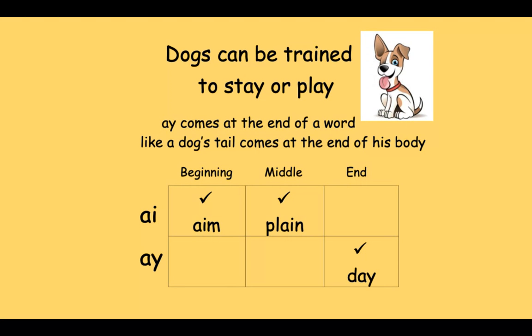AY will come at the end of a word, just like a dog's tail comes at the end of his body. When you hear A at the end of a word, it's AY. AI will come at the beginning, as in 'aim,' or in the middle, like 'plain.'